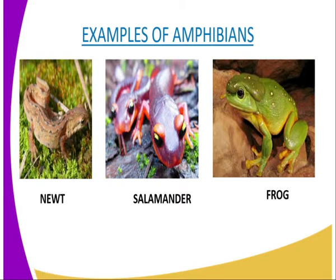We can have another characteristic where gaseous exchange occurs through three places: the skin, the gills, and also the lungs. Another characteristic is that they have two eyes and an eardrum behind the eyes. This is clearly seen from our diagrams on screen.